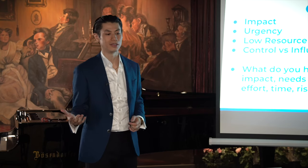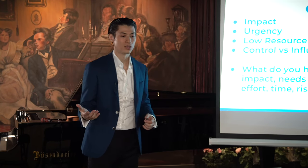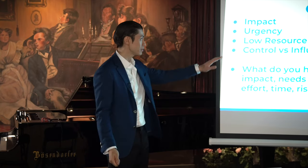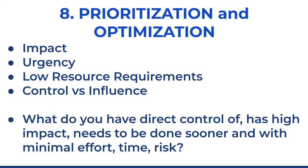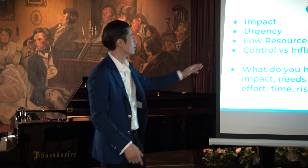What do you have direct control of that has high impact and needs to be done sooner with minimal effort, time, and risk? That's the question you want to ask. Start to prioritize. You make a list of things you want to do — what do you do first? High impact or low impact? Something that's going to make a high impact, you want to do first.